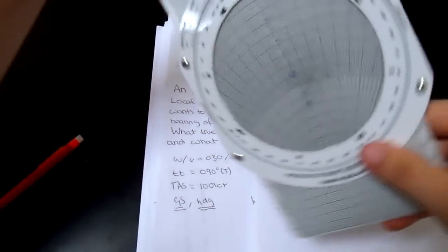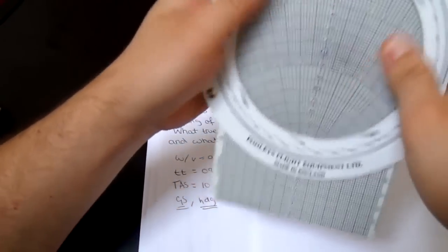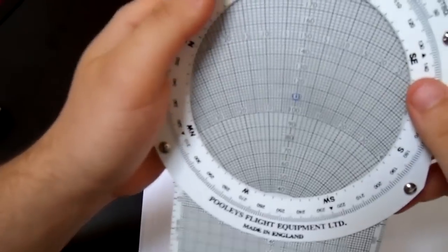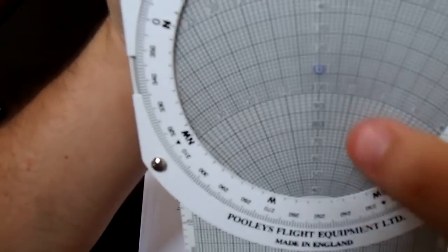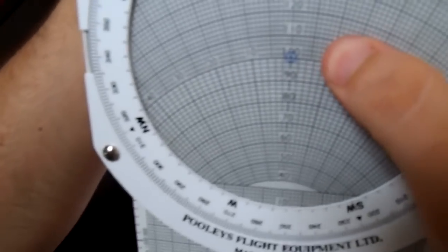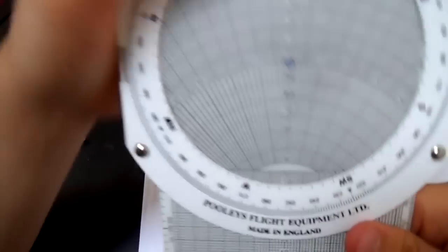So we're going to slot this in with the true bearing and true heading written at the top. Just slide it in nice and comfy. And the first thing we're going to do is, just making sure the slide is clean, cool, is line up the center dot with 100 knots, so with the true airspeed. So we're going to line it with the true airspeed. Bam.